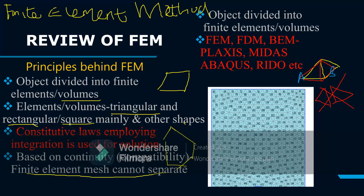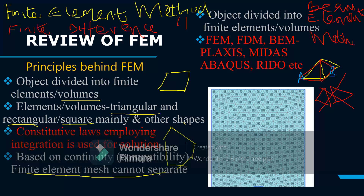Finite Element Methods are commonly referred to as such, but there are minor differences among related methods — for example, the Finite Difference Method and the Beam Element Method — though usually all of them are lumped together as Finite Element Method. Examples of software in this area include PLAXIS, MIDAS, ABAQUS, and RISA. From the principles covered, I'm sure you can think of others.